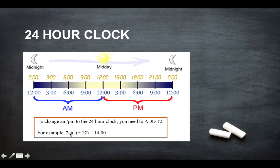So if you've got 2 a.m., if you add 12 to it, you will get 1400 hours. So 1400 hours is the equivalent to 2 o'clock.